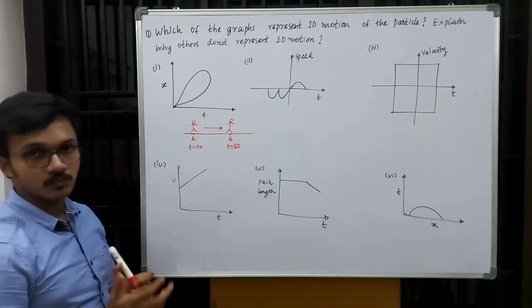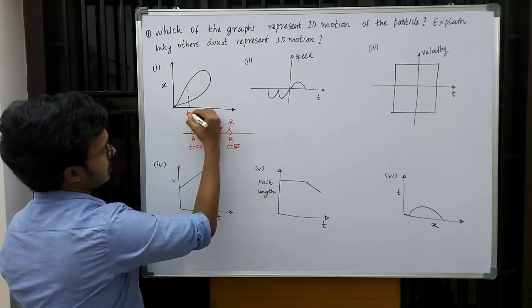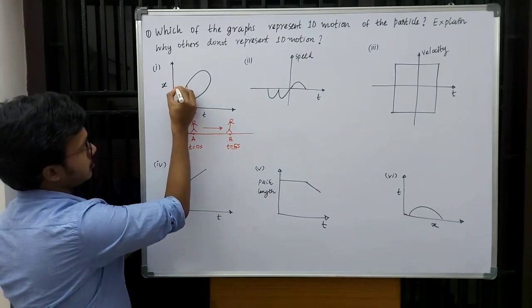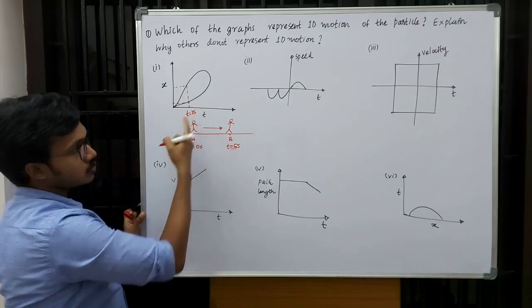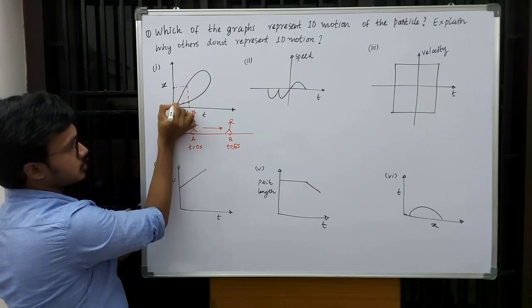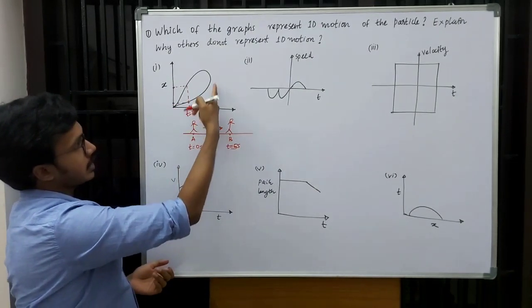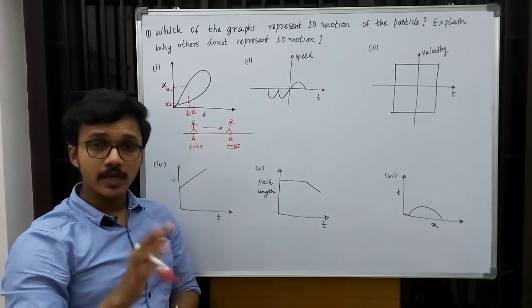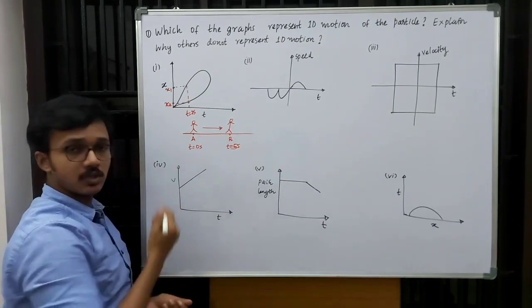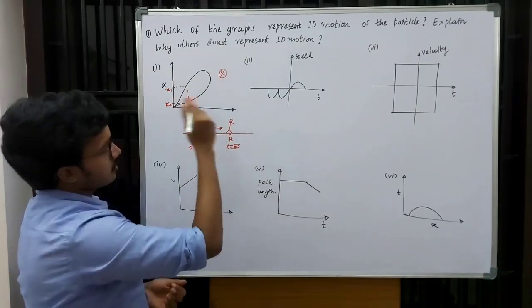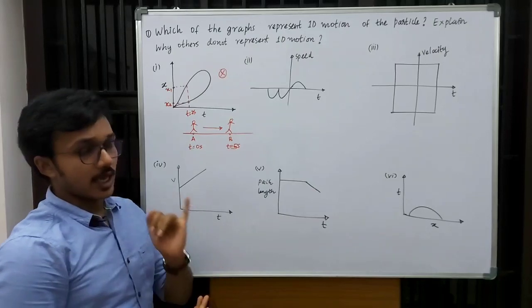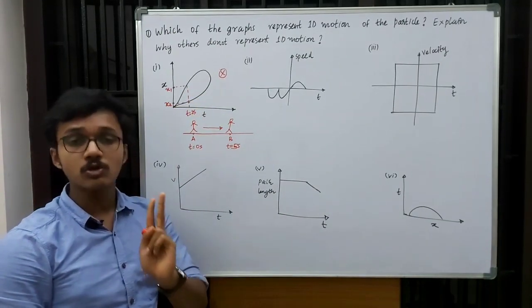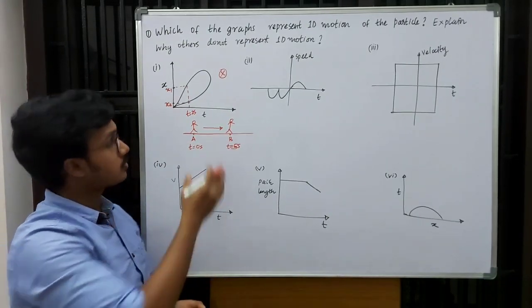So let us see this question now. Let me consider time t equals 2 seconds. What happens here? Let me see the corresponding position. At time t equals 2 seconds, the graph is indicating that the particle is occupying two positions — let us take them x1 and x2. Is it possible? It is not possible for a particle to occupy two different positions at the same time. So we can say this graph is not possible.